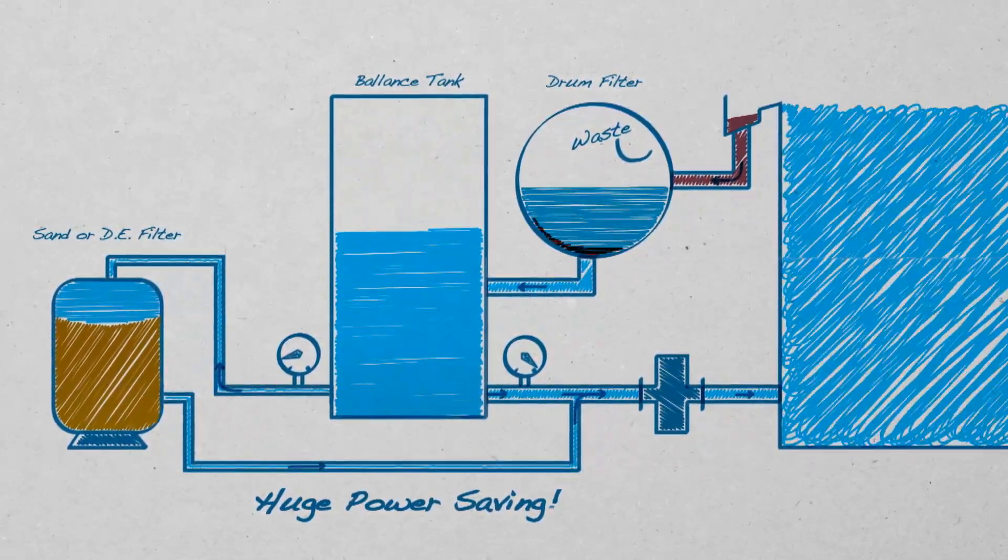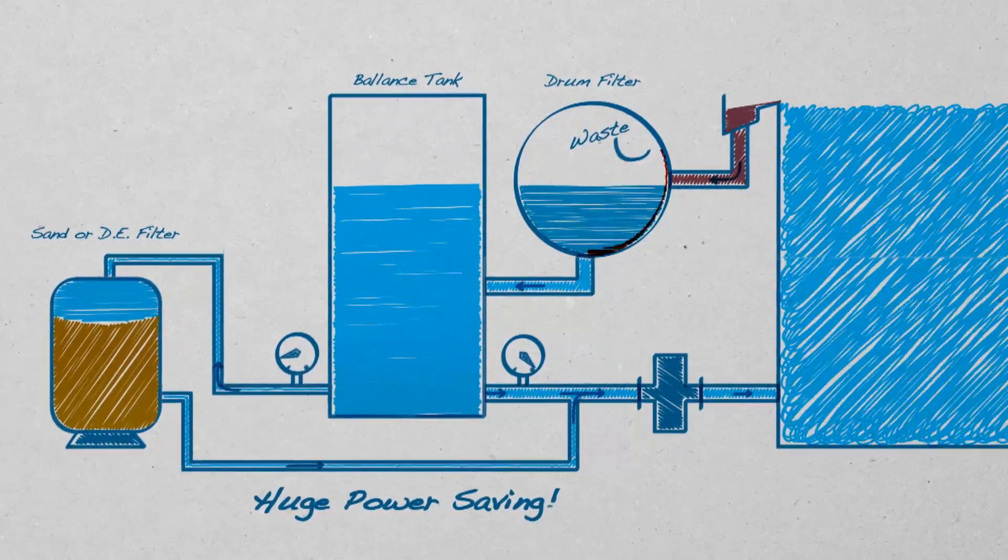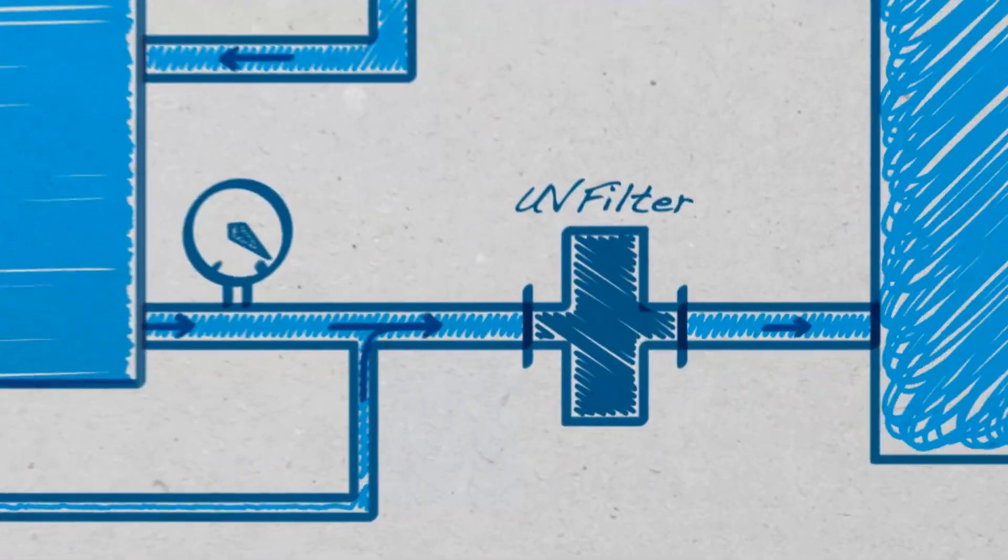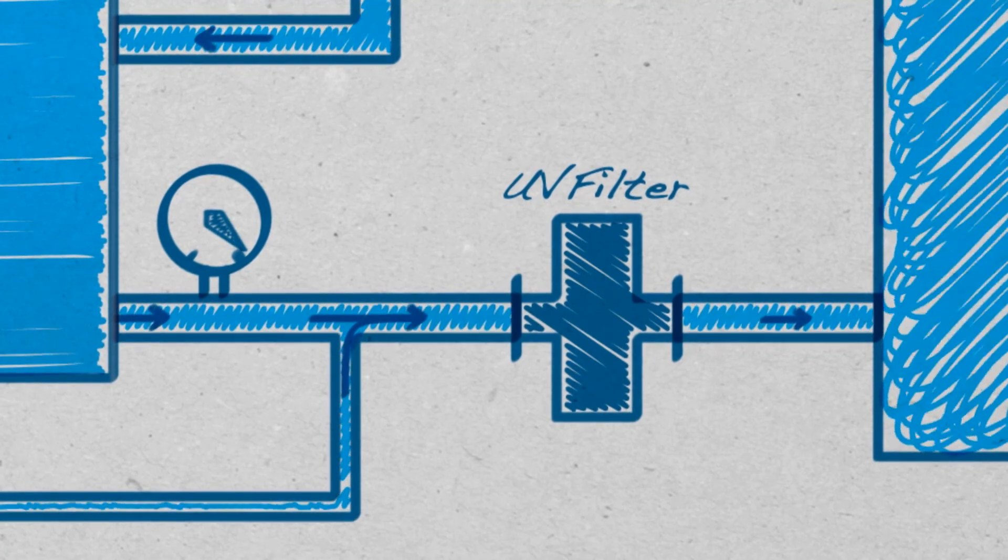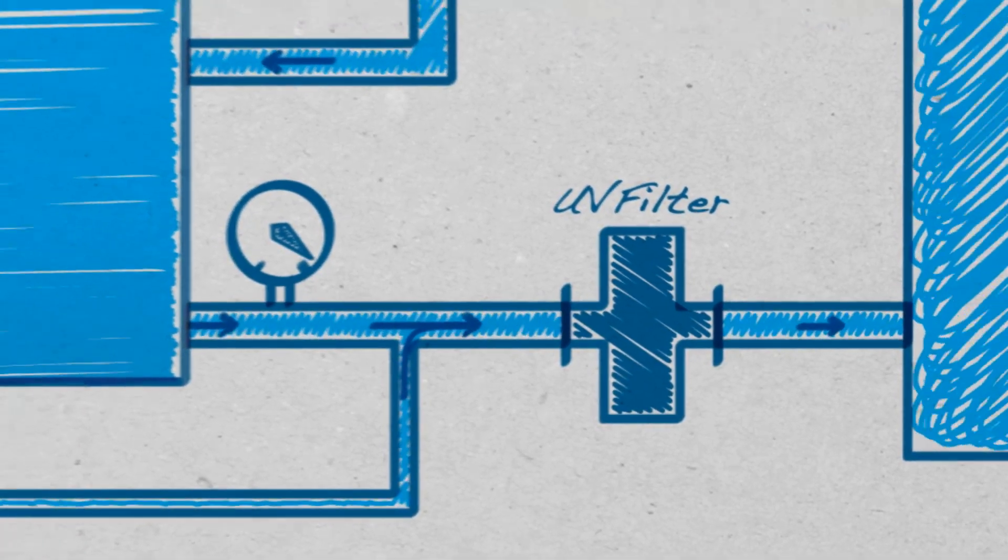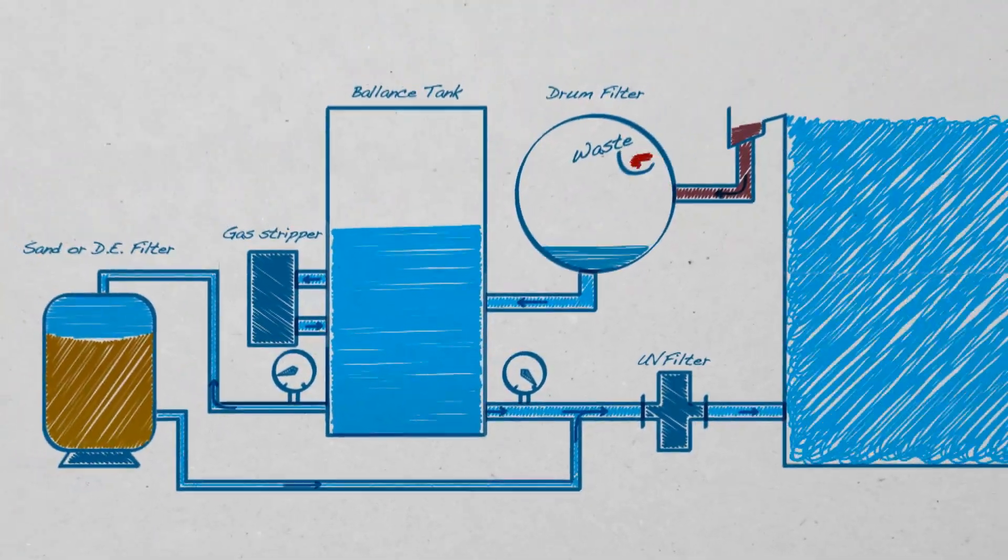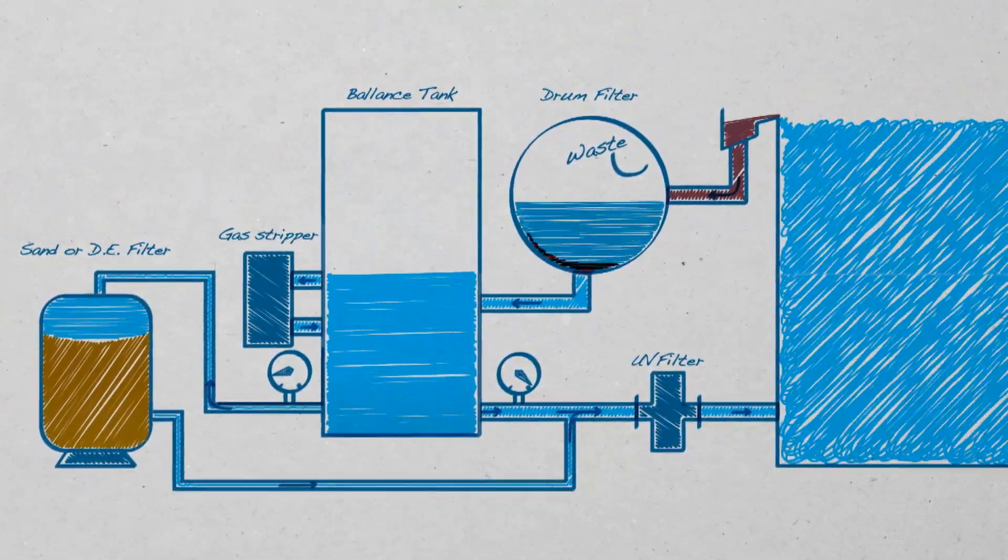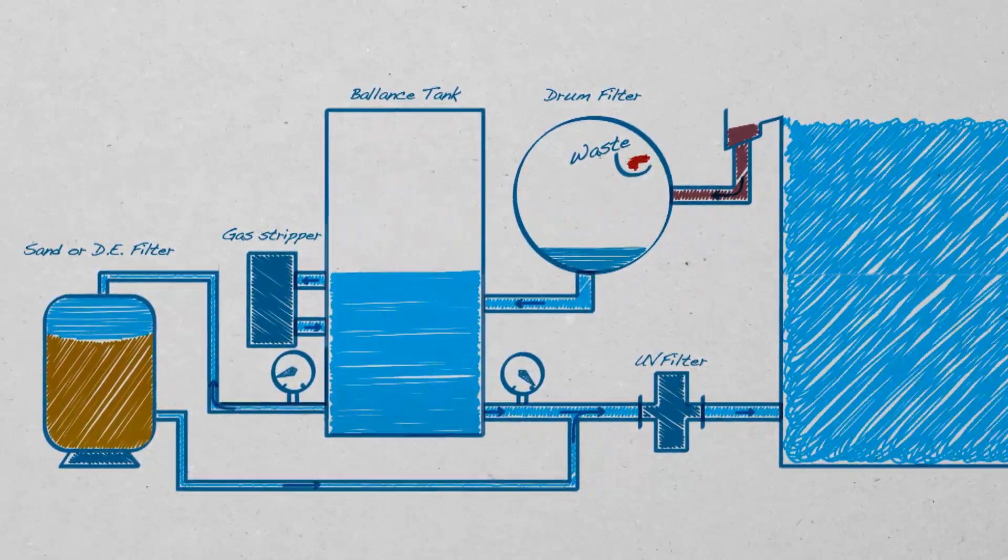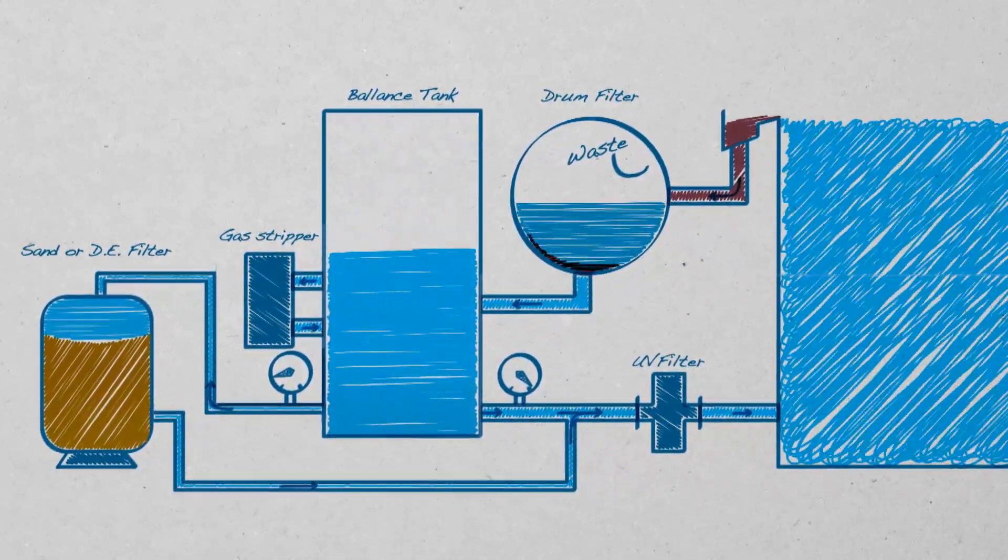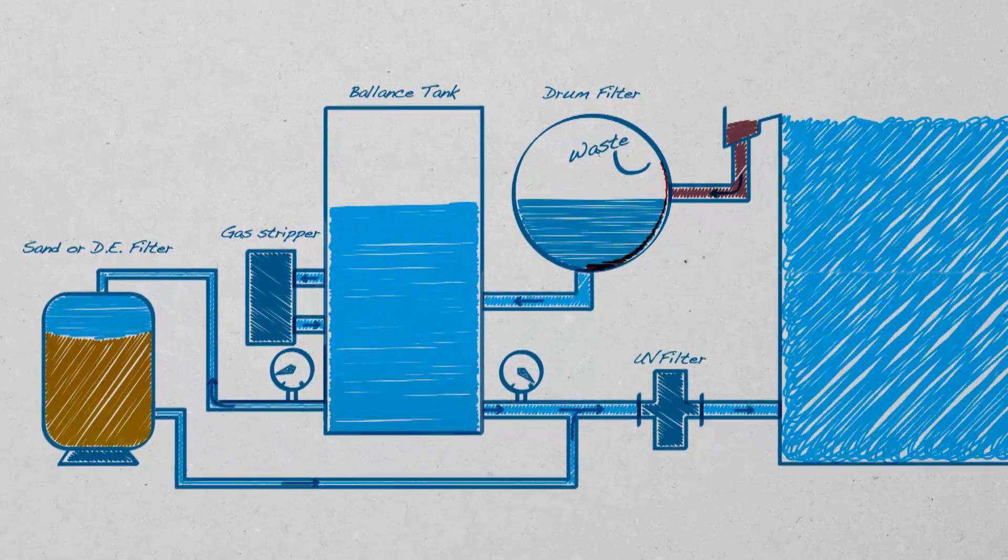Furthermore, we efficiently treat dissolved substances like urine and sweat, which also generates dangerous chlorine byproducts. InBlue removes these substances with state-of-the-art UV technology and an intelligent gas stripper. Flowing 100% of the water through UV also gives excellent protection against chlorine-resistant organisms like Cryptosporidium and Giardia.